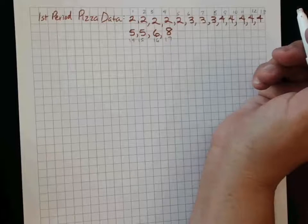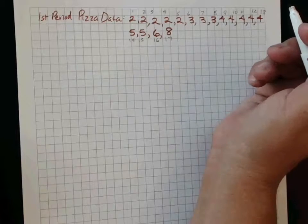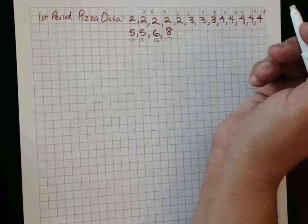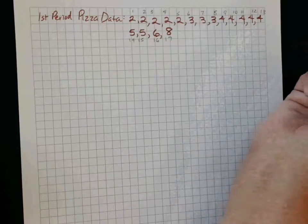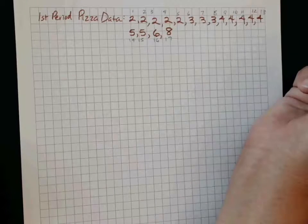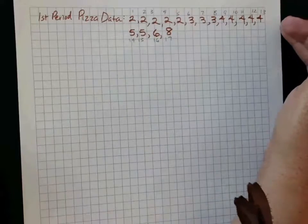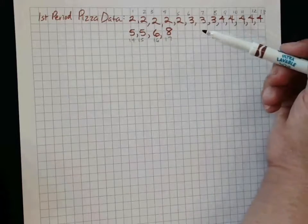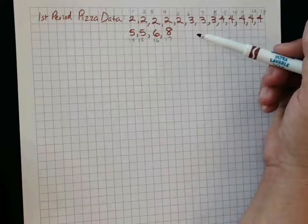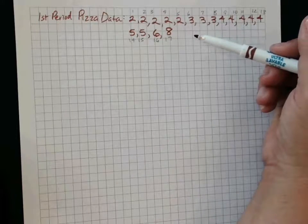Continuing on from our lesson on mean, median, and mode, we're going to look at data. So how can we measure the spread of data? This is the survey I took of how many slices of large pizza you normally eat.